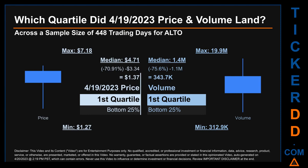Hello, my name is Maria. Which quartile did April 19, 2023 price and volume land in, across a sample size of 448 trading days? The maximum end-of-day price for ALTO was $7.18, while the minimum was $1.27. Within that price range, April 19, 2023's price of $1.37 landed within the first quartile, meaning it was within the bottom 25% of all sampled end-of-day prices. The day's volume also landed within the first quartile, at the bottom 25% of all sampled daily volume.